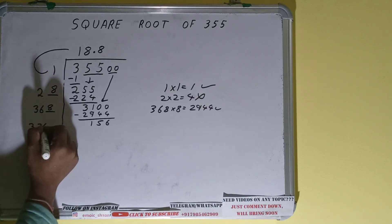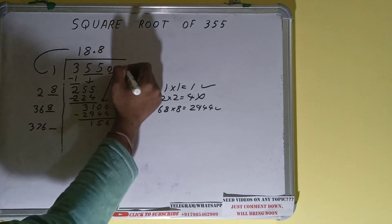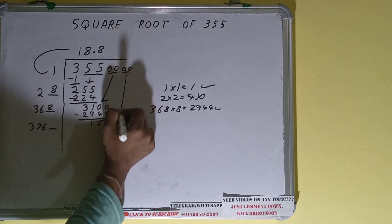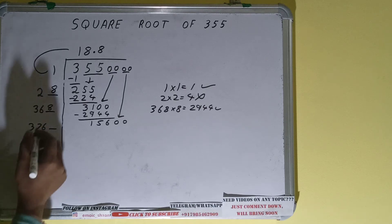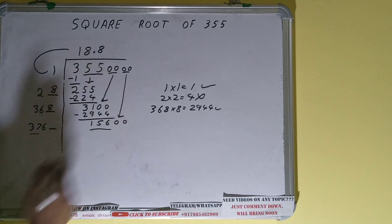Now 368 into 8 we did, so add both. So 368 plus 8 will be 376 and one digit extra. This number we need to make it big, so bring the next pair of zeros down and number will become as 15600. Now we need to compare this 37 with this 156.